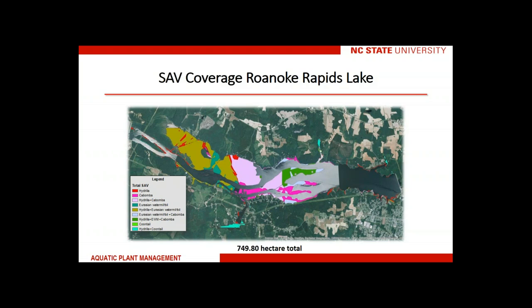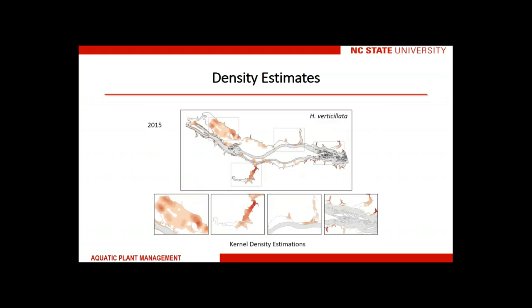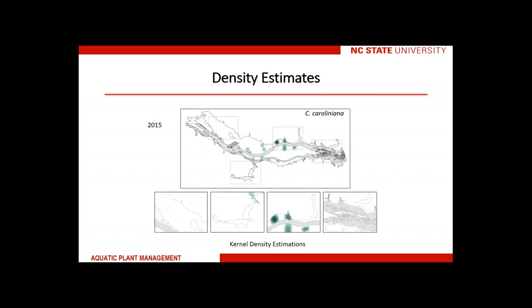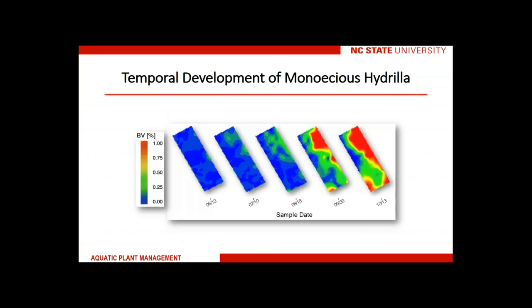It's very important to know how many different plant types you have so that your management technique can be as selective as possible for the weedy species. An example of a bathymetry map using hydroacoustics can also provide updated bathymetry for use with management programs. Just a few examples of density estimates you might generate from surveys — this can be helpful in refining your management program. Here is an estimate for hydrilla and cabomba, and a temporal estimate of hydrilla development showing how species density might change within a given year. Hydrilla responds very rapidly to warm water and can show enormous amounts of growth once water warms up.